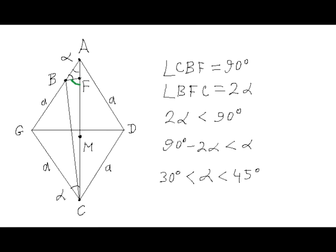And so angle BFC has measurement 2α. This is because angles BFC and BFA are supplementary angles. Also, it follows from this drawing that angle with measurement 2α must be less than 90 degrees angle, because it's an internal angle of a right triangle BFC. And the other internal angle of the same triangle, angle BCF, is 90 degrees minus 2α. It must be less than angle GCA, which measures 1α. From this, we obtained inequality 90 degrees minus 2α must be less than α, which determines pretty narrow range for angle α that makes such construction possible. α must be greater than 30 degrees and less than 45 degrees.